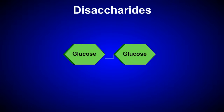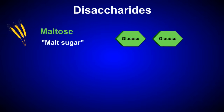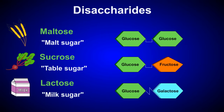Disaccharides are formed when monosaccharides are joined together through dehydration reactions, forming what are called glycosidic linkages. Common disaccharides include maltose, which is made up of two glucose molecules; sucrose, also known as table sugar, which is made up of glucose and fructose; and lactose, or milk sugar, which contains glucose and galactose.